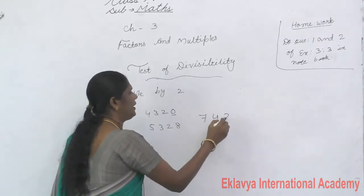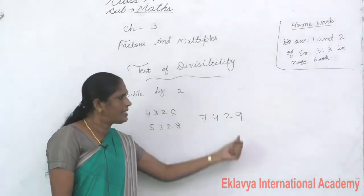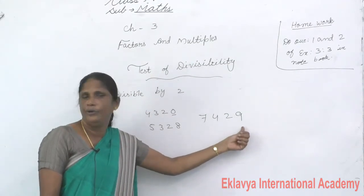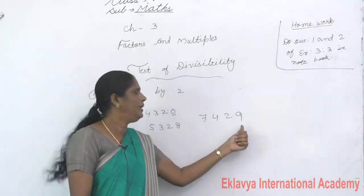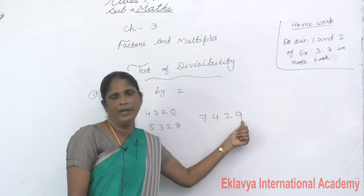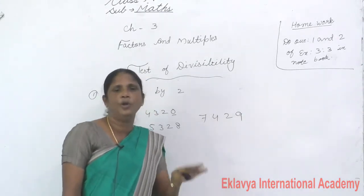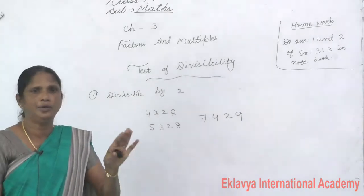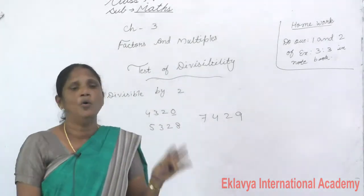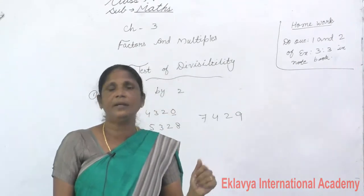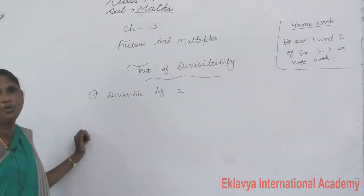Then 7429 — which digit comes in the 1's place? 9. This number is not divisible by 2, because 9 is an odd number. So 7429 is not divisible by 2. Remember: if 0, 2, 4, 6, or 8 comes in the 1's place, that number is divisible by 2.